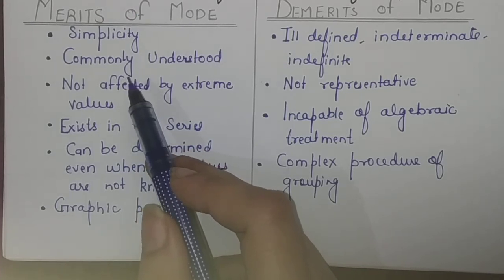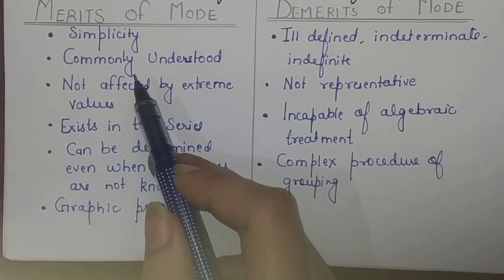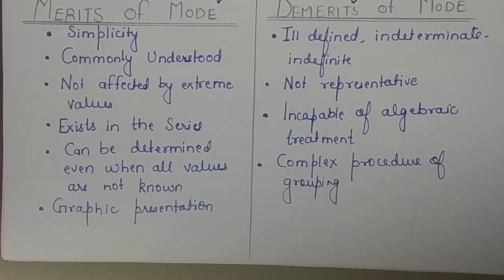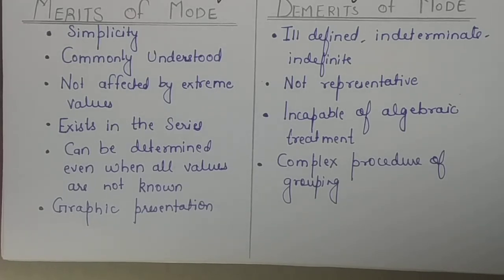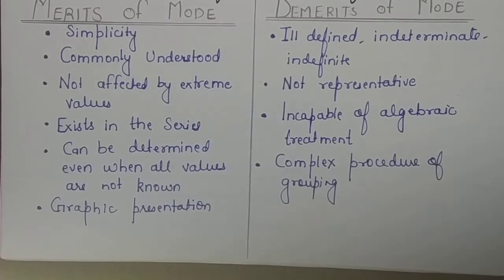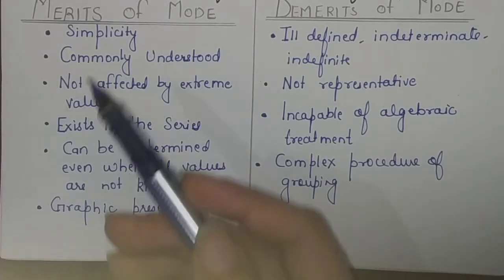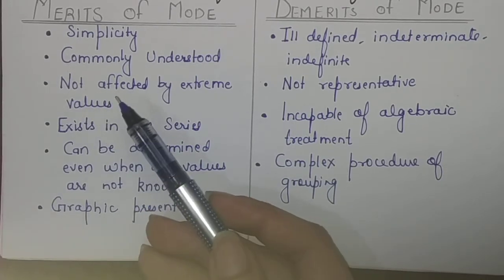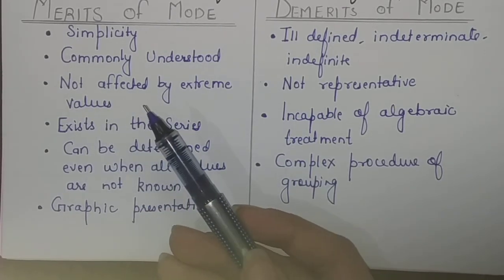Mode is an average that people use in day-to-day expressions. For example, the average size of a ready-made garment — the most popular size like L or M — which TV program is most popular, which color of vehicle people buy most. Mode represents what is most popular, and it is therefore commonly understood by everyone.